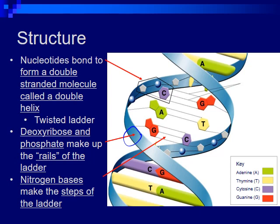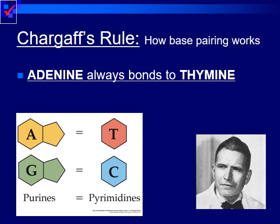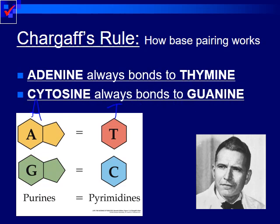The nitrogen bases always bond to what we call their complement. C will always go with G, and A will always go with T. This is what we call Chargaff's rule. Chargaff's rule states that adenine (A) always bonds to thymine (T), and guanine always bonds to cytosine. So A to T, C to G — make sure you keep that in mind.